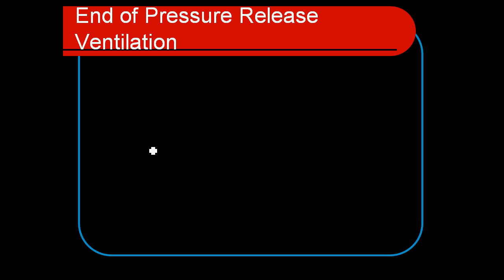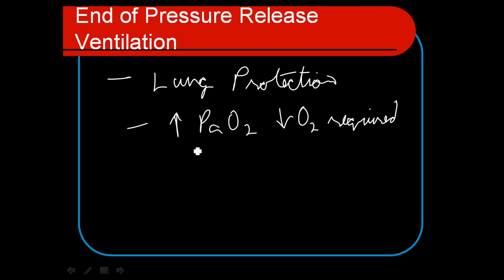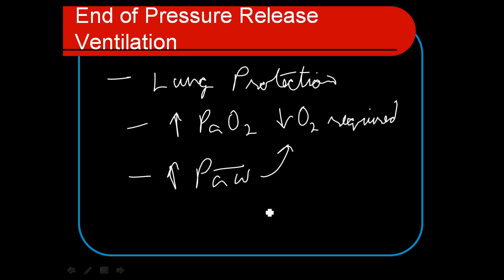What are the advantages of pressure release ventilation? It's a lung-protective strategy. It allows us to increase PAO2 or decrease oxygen requirements in our patient. It can be a comfortable mode for the patient, and it allows us to have very high mean airway pressures, which help with oxygenation problems. It's a radical way of ventilating a patient, but it can be used clinically — most often with patients with really difficult-to-manage ARDS, or Acute Aspiration Syndrome as another example. Thank you very much.